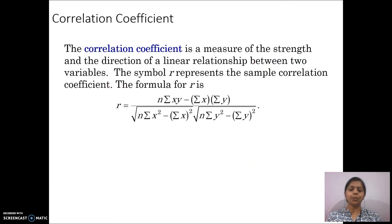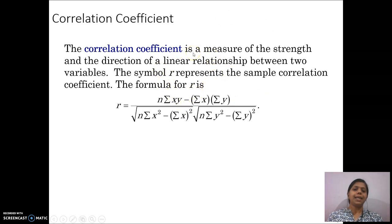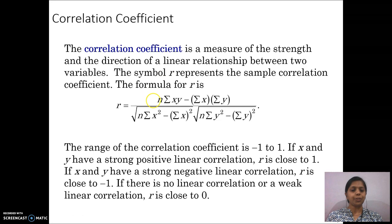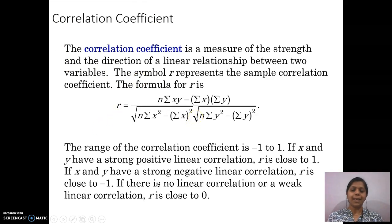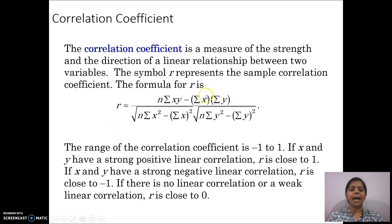Then comes the correlation coefficient. This coefficient is the measure of the strength and direction of a linear relationship between variables X and Y. The range of the correlation coefficient is minus 1 to 1. If X and Y are strongly positively correlated, the value is close to 1. If strongly negatively correlated, the value R is close to minus 1. If there is no linear correlation, R is close to 0.